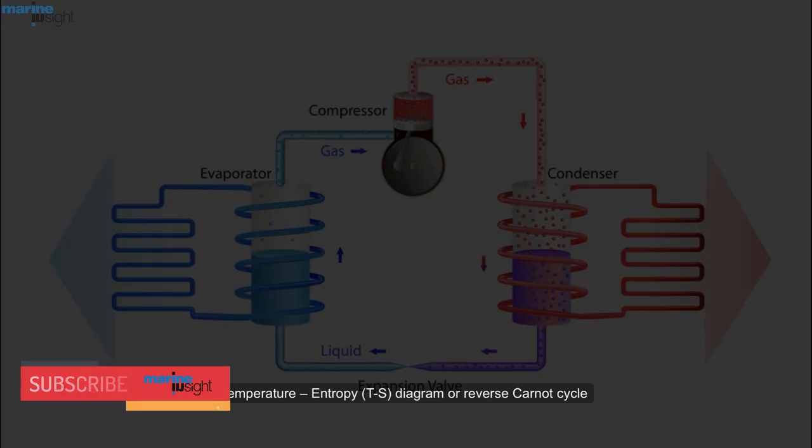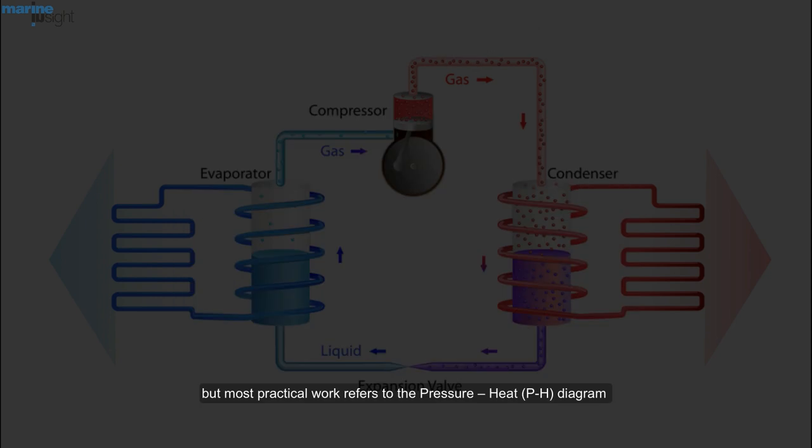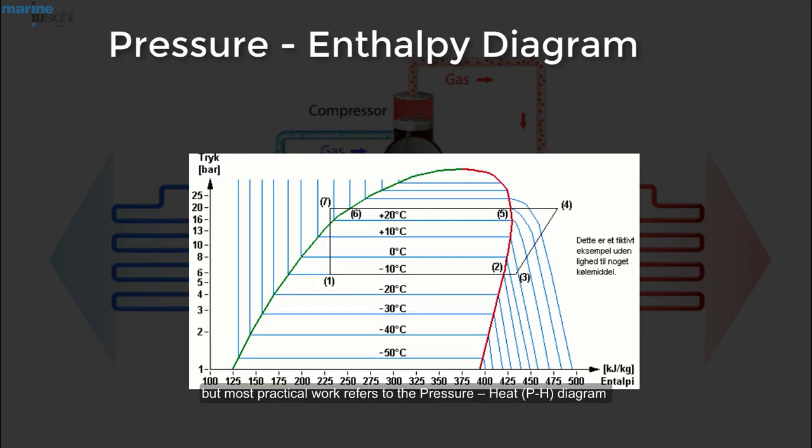Temperature-entropy diagram or reverse Carnot cycle still has its academic advantages to understand refrigeration cycles. But most practical work refers to the pressure-heat diagram with a logarithmic pressure scale.